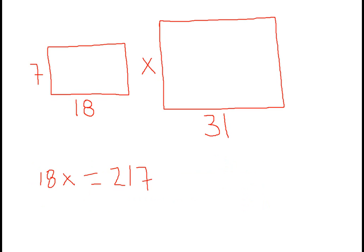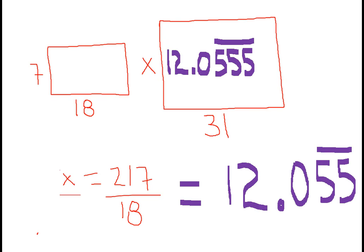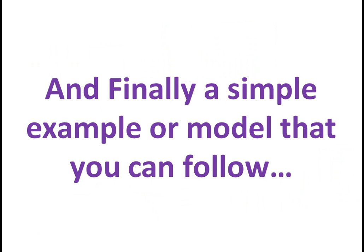We then come in. We do the multiplication. We divide both sides by 18. We cancel the 18s. We now have x equals 217 over 18. Bada bing. That's 12.05555555. Forever and ever. Amen.